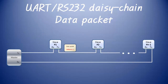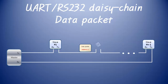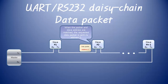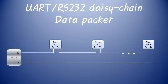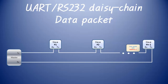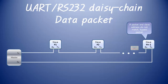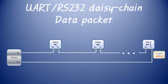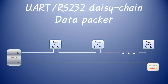Slave device number one receives the packet and checks the address. It does not match its own address, so it sends the packet on to the next slave device. Slave device number two receives the packet and its address matches, so it sends its state to the next slave device with a reply packet: 2 + READ_STATUS + status. Since the next slave devices do not have address two, they continue to relay the packet until the master finally receives it.